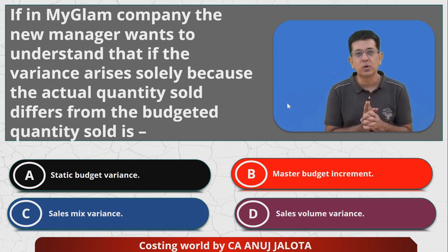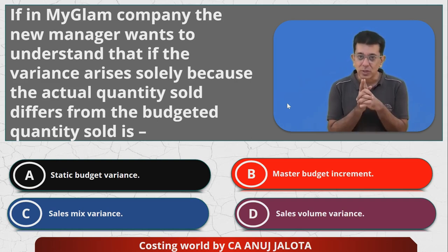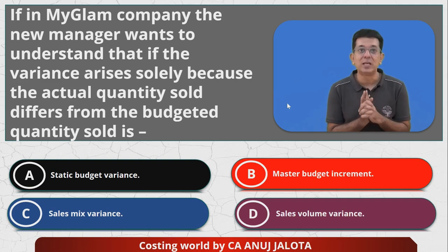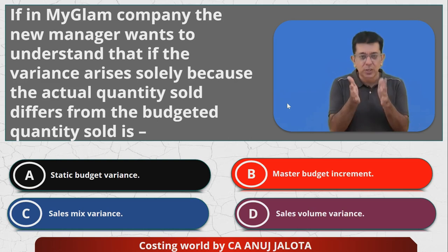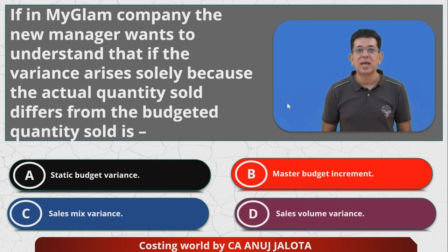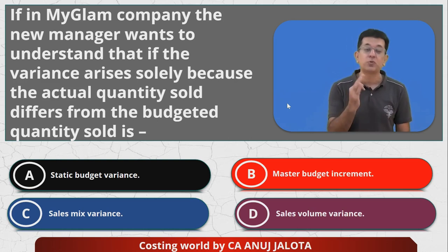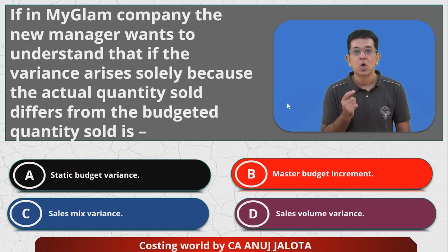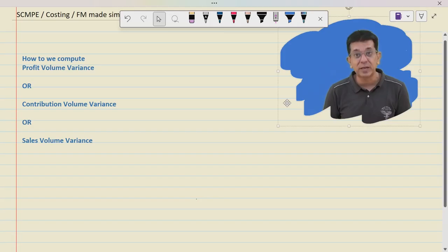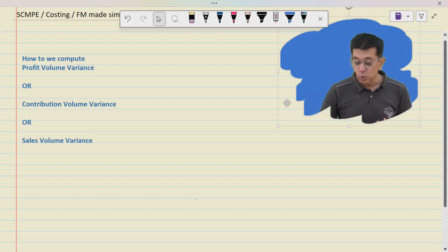The only option left is D, sales volume variance. Let me tell you — actually, in this question there could be multiple answers, because any variance that arises due to the difference between budgeted quantity sold and actual quantity sold actually covers three variances. Not only D is the answer, but since those other answers are not printed among the options, ultimately D will be the answer.